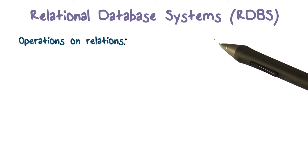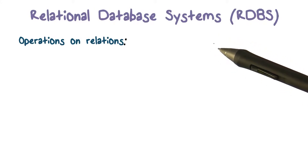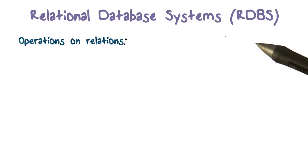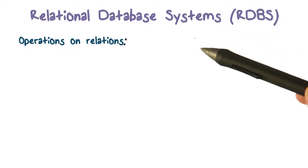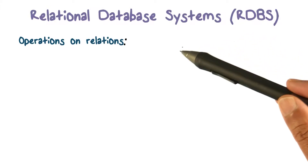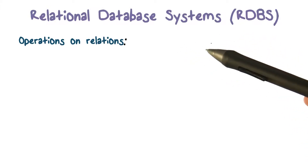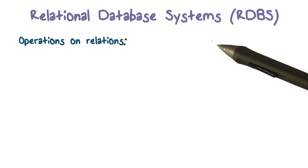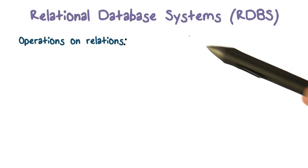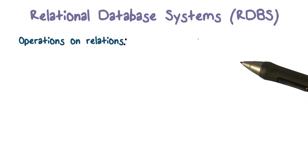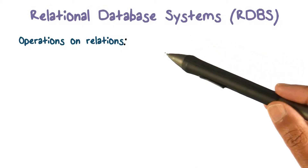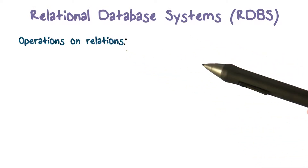Now that we have seen what a relational database looks like — it's a collection of relations or tables — we looked at a table and tuples in it, the various attributes and so on. So what kind of operations can you perform on tables?